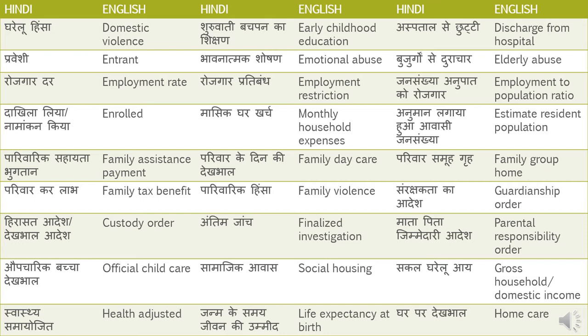Maasik gharkharch — Monthly household expenditure. Anumaanik nivas jansankhya — Estimated Resident Population. Nivas jansankhya means Resident Population, and anumaan lagaya hua means Estimated.